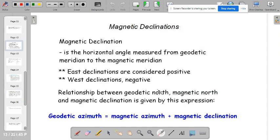Let's go to the magnetic declination. A magnetic declination is the horizontal angle measured from the geodetic meridian to the magnetic meridian. And the east declinations are considered positive and west declinations negative. And then the relationship between geodetic north, magnetic north, and magnetic declination is given by this equation. That geodetic azimuth is equals to magnetic azimuth plus the magnetic declination.